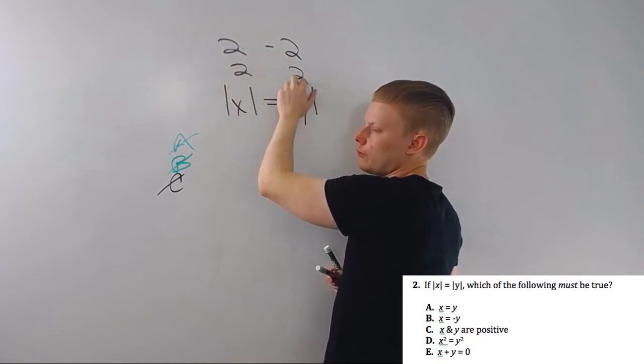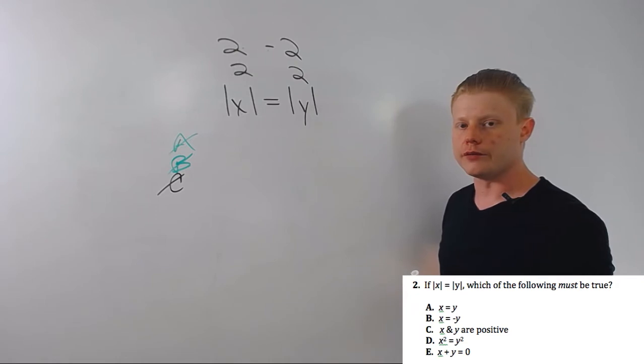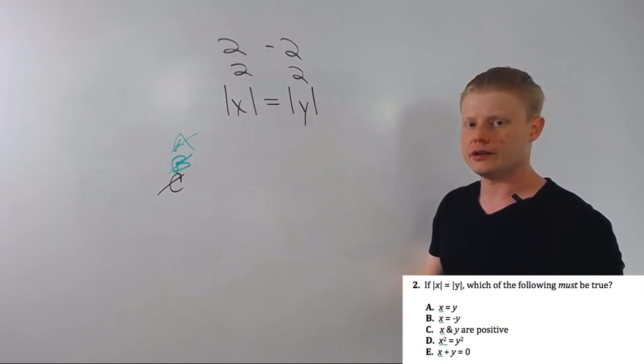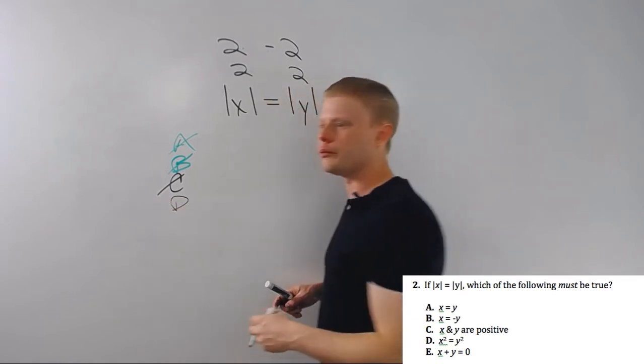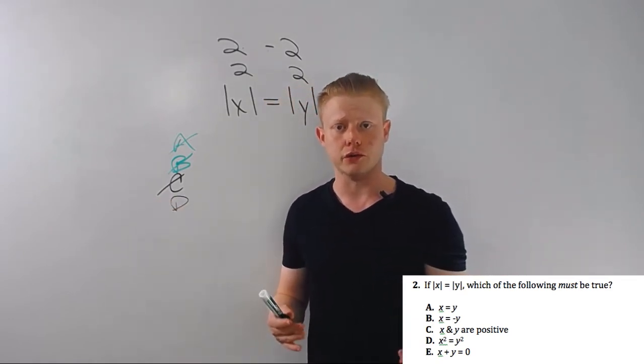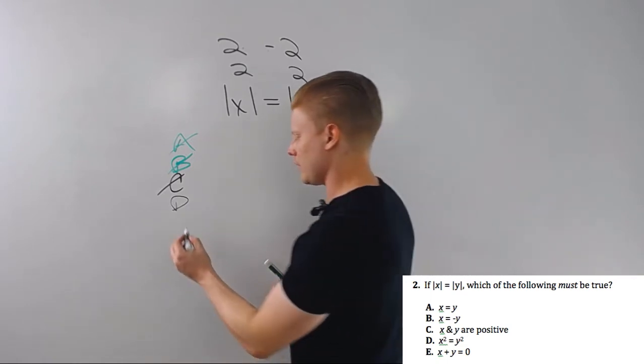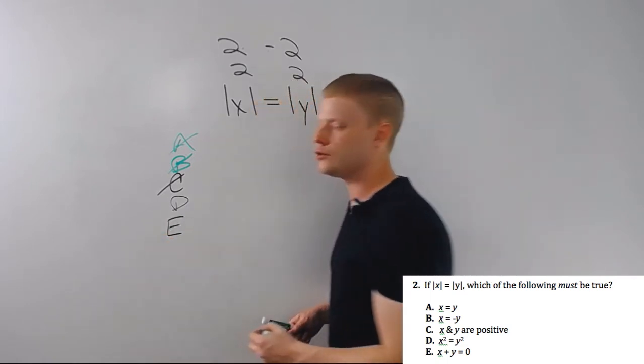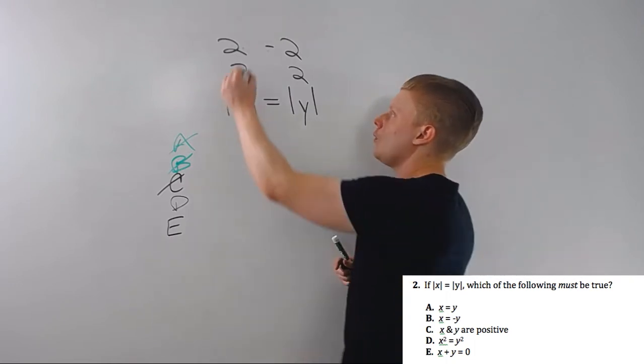X squared equals y squared. All right, well that works, right? Two squared is four, negative two squared is four. Four and four. Okay, well I can't think of a way that I can prove that false. If I make these both zero that works. If this is one, negative one still works. So I mean I'm pretty sure that's going to be the case, but again it's really hard to prove something that always has to be true.